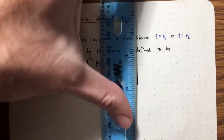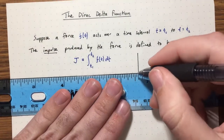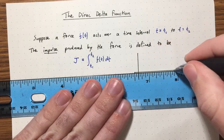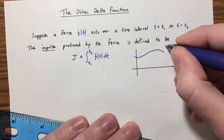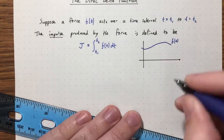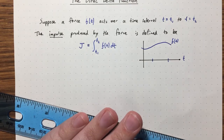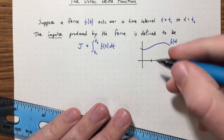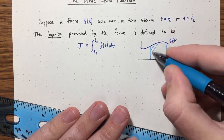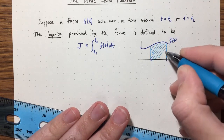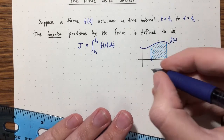The graphical meaning is straightforward: we're taking the area under the curve. So the impulse is the area under the curve f(t) from t1 to t2.